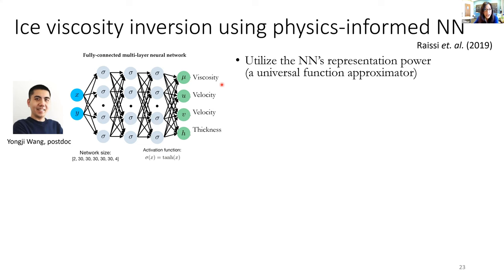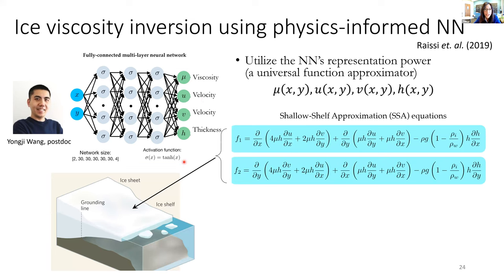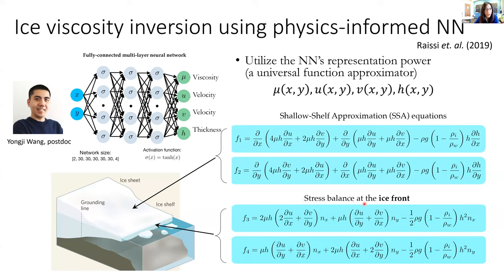The neural network represents the velocity, thickness, and viscosity fields, with spatial coordinates as input and these quantities as outputs. This is possible because neural networks are universal function approximators — we can train them to approximate these data fields. Once we use the neural network to represent these quantities, we substitute them into the shallow shelf equations and calculate the equation residuals. The viscosity, velocity, and thickness exactly satisfy the equations when the residuals are zero. We also include stress balance conditions near the ice front in the neural network training.